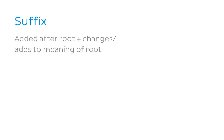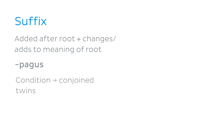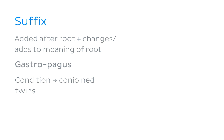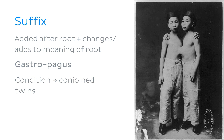The suffix is added after the root to change or add to its meaning. For example, the suffix '-pagus' refers to a condition resulting in conjoined twins. If we add this to our root word, we get 'gastropagus' — conjoined twins who are united at the stomach or abdomen.